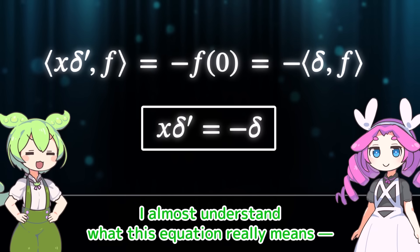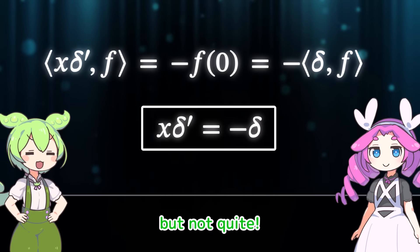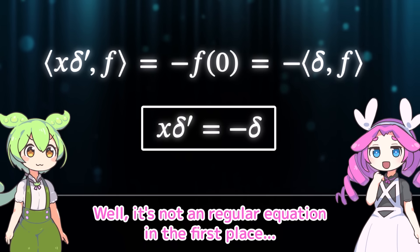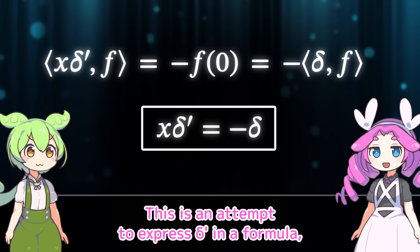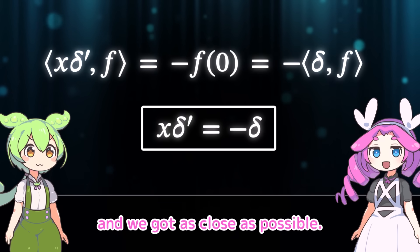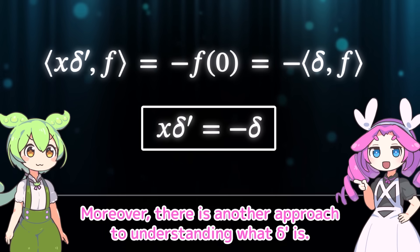I almost understand what this equation really means, but not quite. Well, it's not a regular equation in the first place. It is not a regular equation — it means they have the same effect on f when applied through the bracket; they are equal as distributions. This is an attempt to express delta prime in a formula, and we got as close as possible.